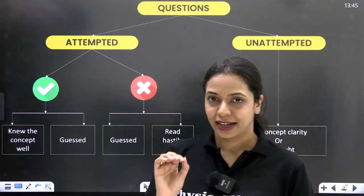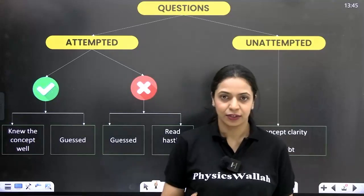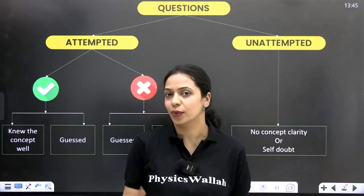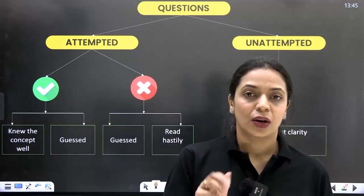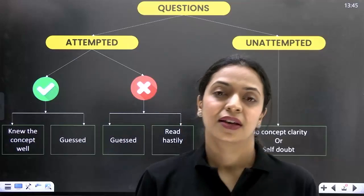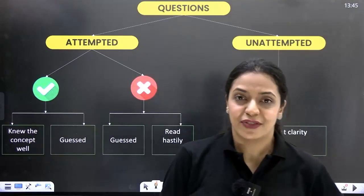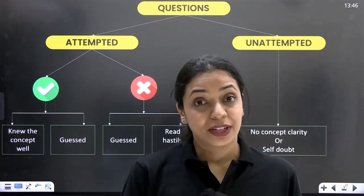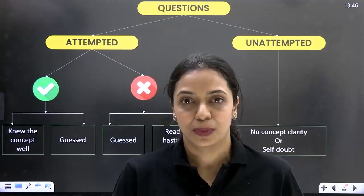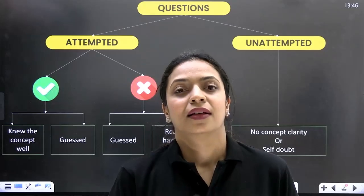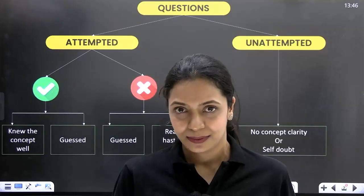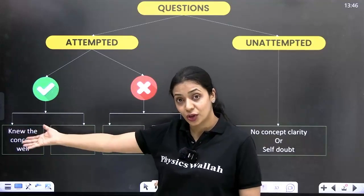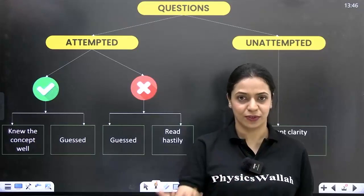There are three possibilities that can happen with each question. Either you answer correctly and get plus 4 marks, you answer incorrectly and get minus 1, or you leave it unattempted for 0 marks. If you got a question correctly, there are two reasons: you knew the concept and understood the question, or you had a doubt between two options, guessed one, turned out to be lucky, and that was the correct answer. If you've studied really well, that could also have fetched you the correct answer.